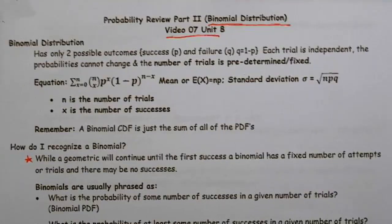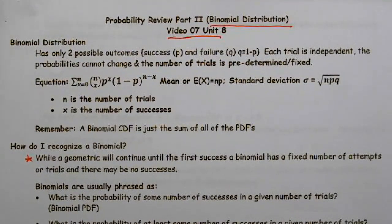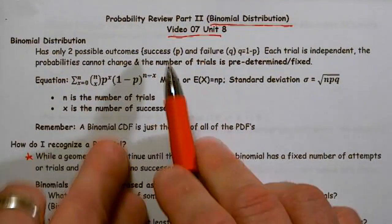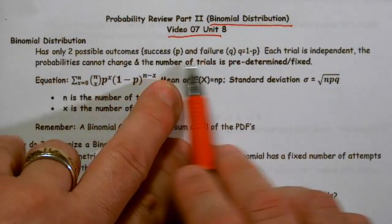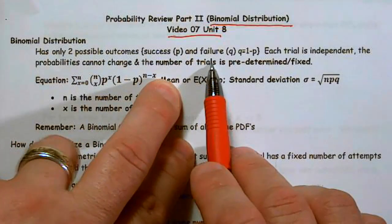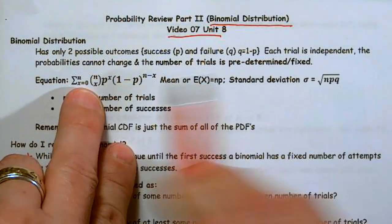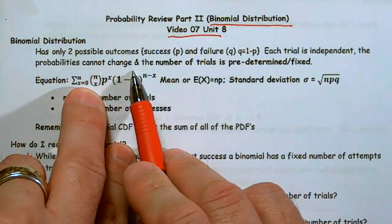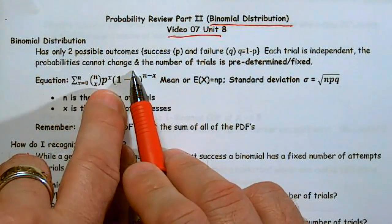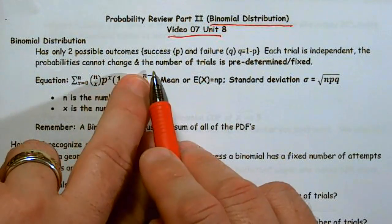The probability review on binomial distribution. The binomial has two possible outcomes: success and failure. Each trial is independent and the probabilities cannot change. That's exactly the way the geometric was — that's Bernoulli.